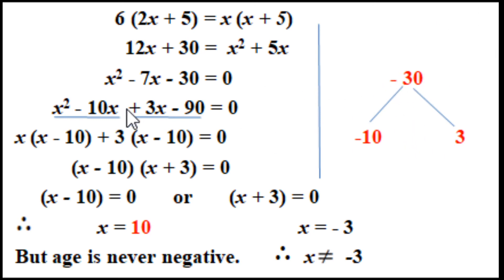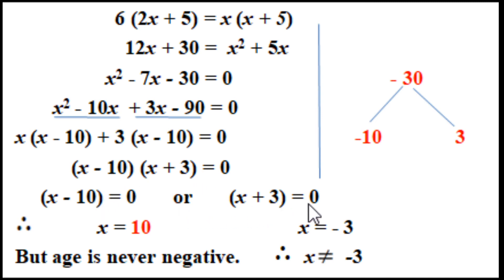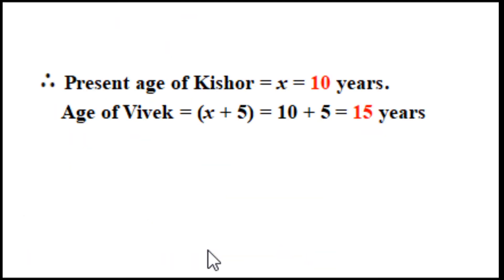The factors are minus 10 and 3. So x squared minus 10x plus 3x minus 30 equals 0. Taking common: x(x minus 10) plus 3(x minus 10) equals 0, giving (x minus 10)(x plus 3) equals 0. Therefore x equals 10 or x equals minus 3. Age is never negative, so x equals 10. Present age of Kishore is 10 years and age of Vivek is x plus 5 equals 15 years.